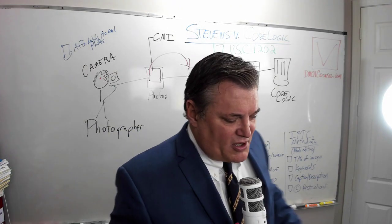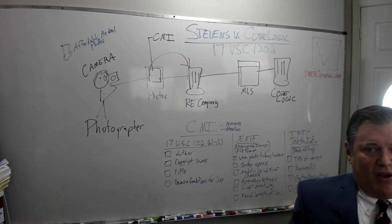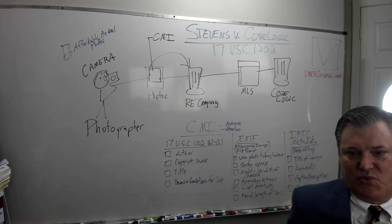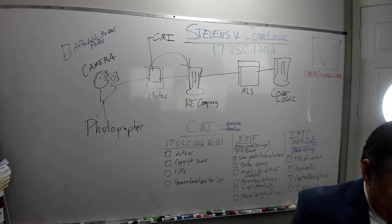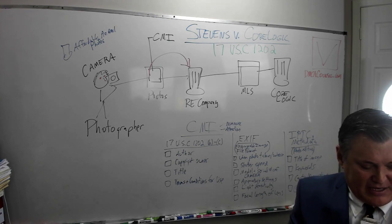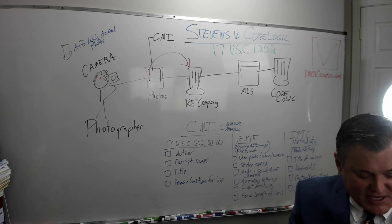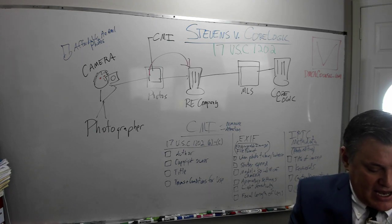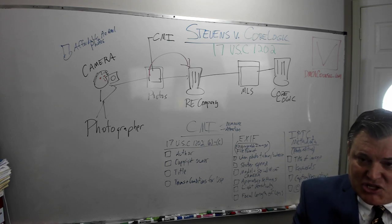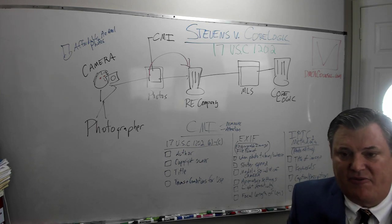Let's take a look at this CMI. Section 1202 provides: no person shall, without the authority of the copyright owner, intentionally remove or alter any copyright management information, knowing or having reasonable grounds to know that it will induce, enable, facilitate, or conceal infringement of any copyright. So it's intentional and knowing — having reasonable grounds to know that it will induce, enable, facilitate, or conceal infringement of copyright. That's what the law prohibits.